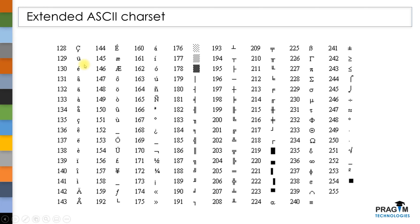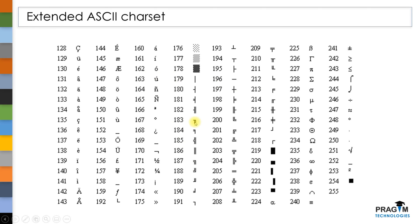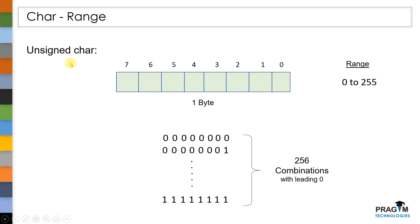This Extended ASCII Charset contains the characters of different other languages, whereas the primary ASCII table contains the characters of only the English language. To use the characters of this Extended ASCII Charset, we need the remaining 8th bit. In the case of signed type modifier, the 8th bit is reserved to store the sign of the value, so you cannot store these characters with signed. In this case, you must use unsigned type modifier.